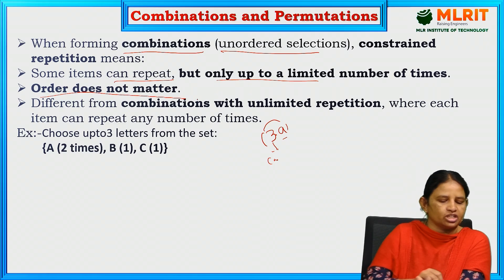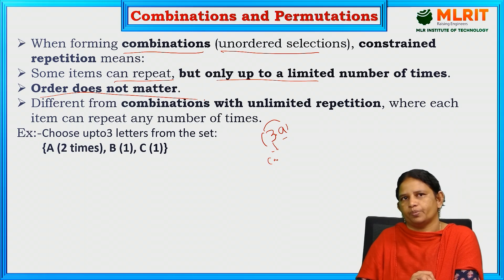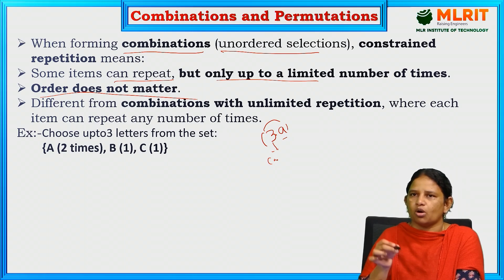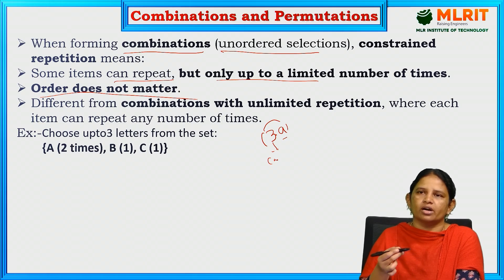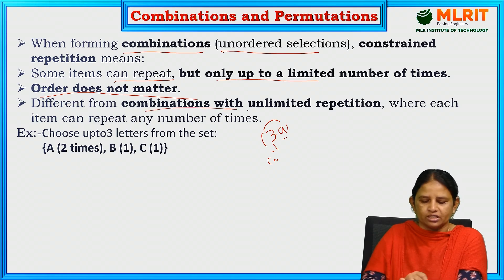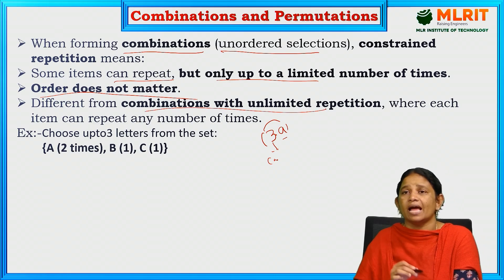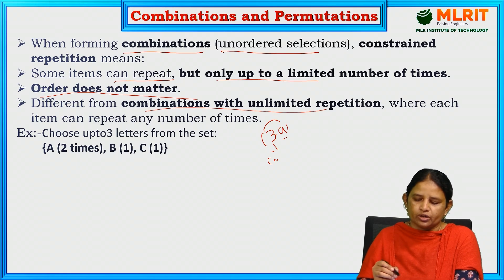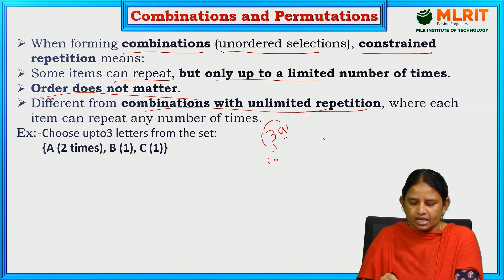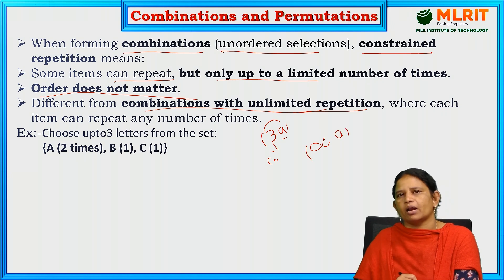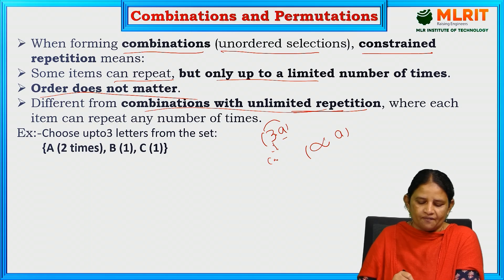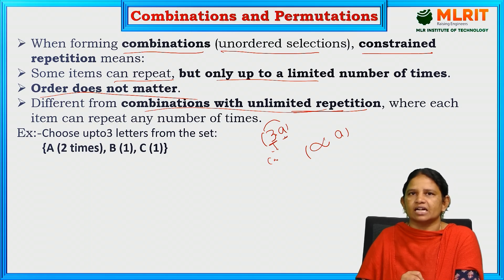In the case of permutation, order does matter. In the case of combination, order does not matter. In both combinations and permutations, we can use repetition — sometimes constrained repetition, sometimes unlimited repetition, that is infinite A, meaning A can be repeated multiple times. Whereas 3A is a constrained repetition.